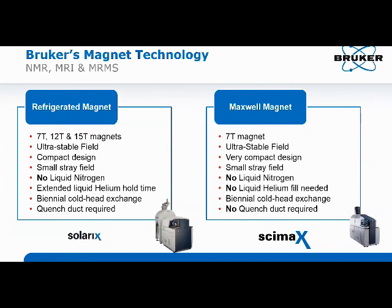The Maxwell magnet is a 7-Tesla magnet with an ultra-stable field, very small footprint, and small stray field. Most importantly, no liquid nitrogen and no liquid helium fills are ever needed — no liquid cryogens, ever. Every two years you'll need to exchange the cold head, and no quench ducts are required. Bruker also provides classical refrigerated magnets in 7, 12, and 15 Tesla configurations with ultra-stable fields, compact design, and no liquid nitrogen. These refrigerated magnets only require filling once a year with a few hundred liters of helium, with a cold head exchange every two years.